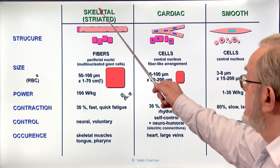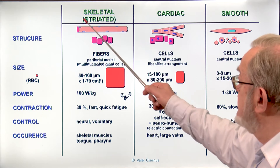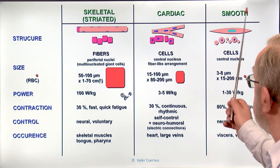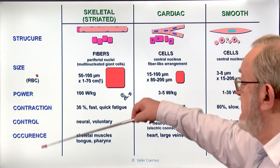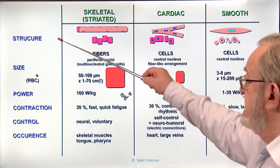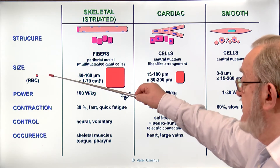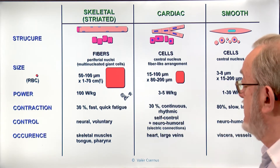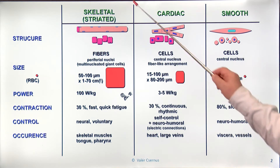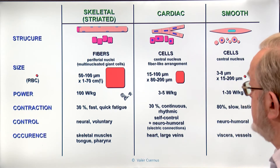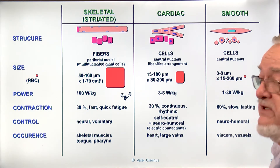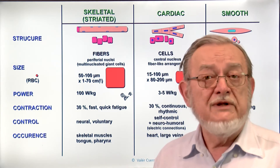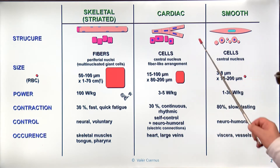The three muscle types — the skeletal muscle, the cardiac muscle, and the smooth muscle — differ in many aspects: in structure, size, power, contraction, control, and occurrence. The skeletal muscle was described in detail in the previous lecture. Now I want to talk about the two other muscles.